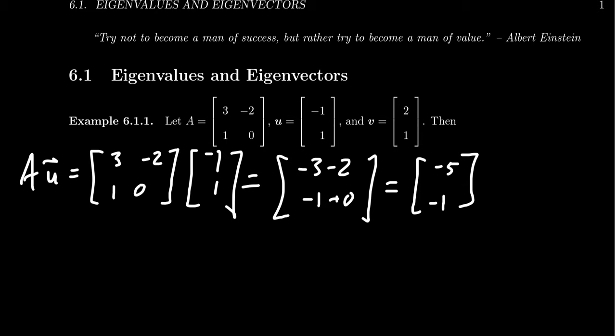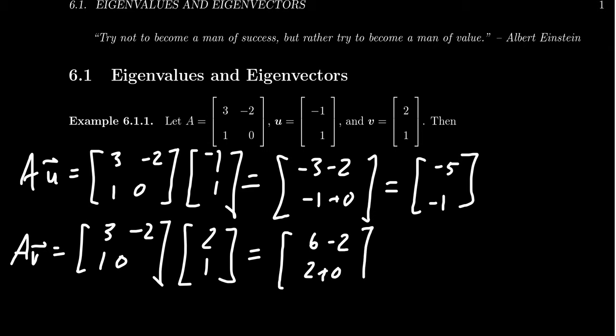How about the second one? Well, if we take A times V, we end up with 3, negative 2, 1, 0, that's our A. V, remember, was 2 and 1. So by matrix multiplication, we end up with 6 minus 2 for the first entry and then 2 plus 0 for the second entry. And this would then turn out to be 4 and 2 as the product. Fairly basic calculation right there.